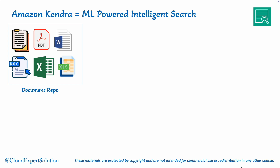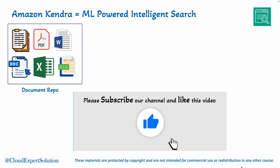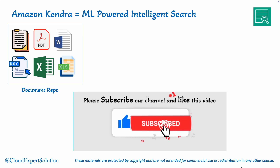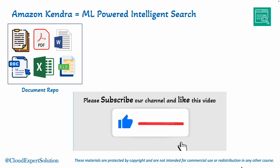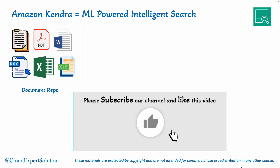Before diving deep into Amazon Kendra and its capabilities, let's take a moment to review how traditional search works. Imagine we have a document repository containing various file types such as plain text, PDF, MS Word documents, RTFs, Excel files, and others.